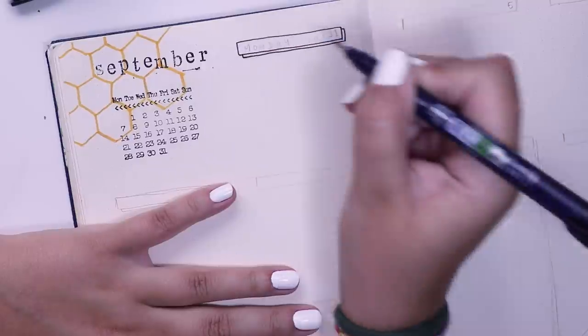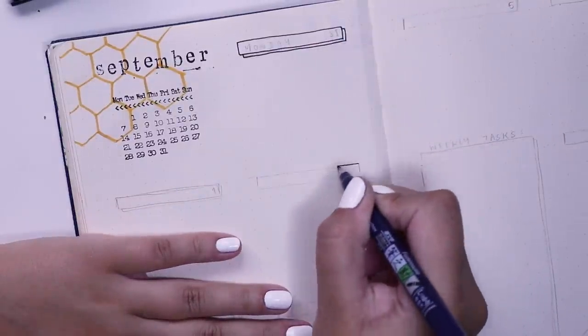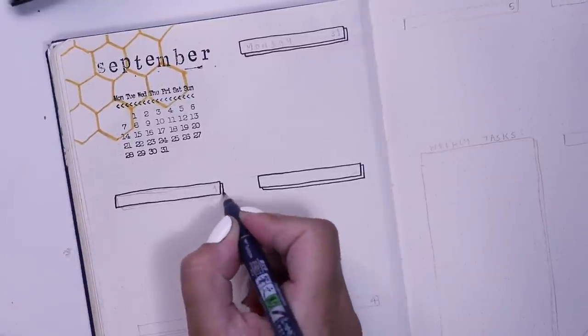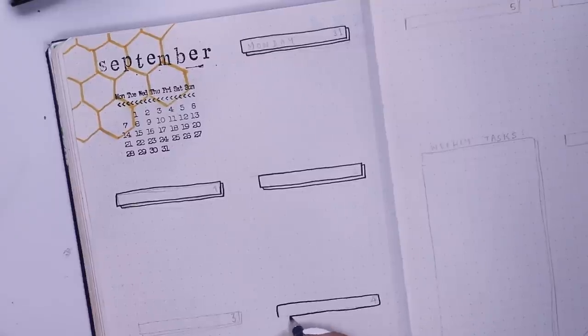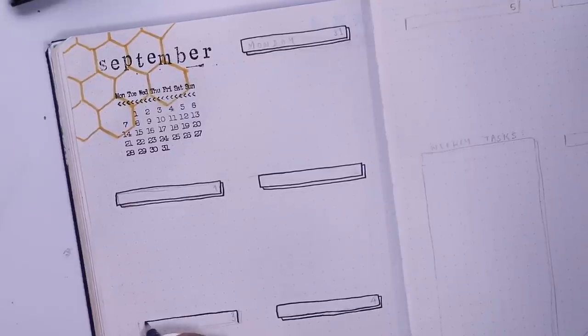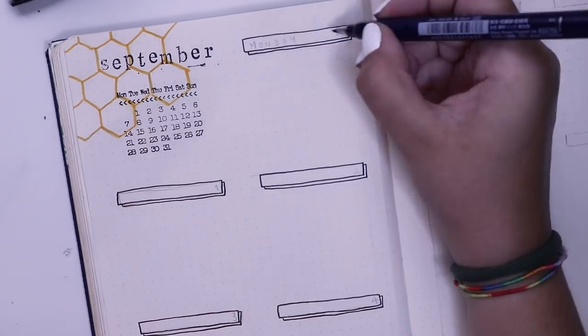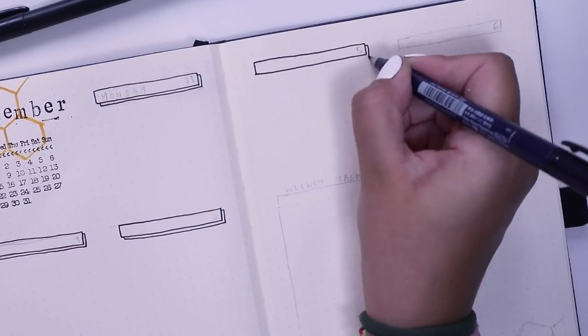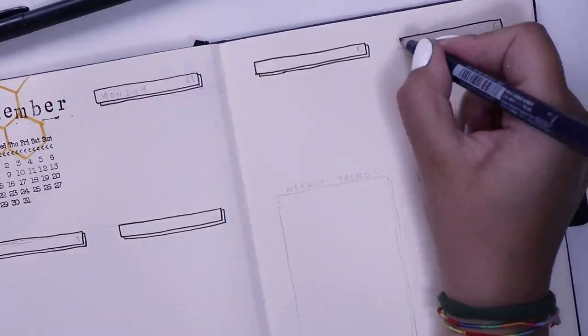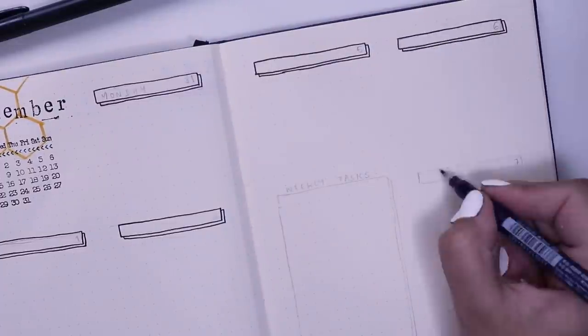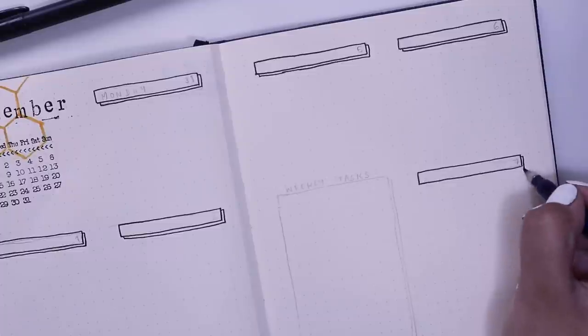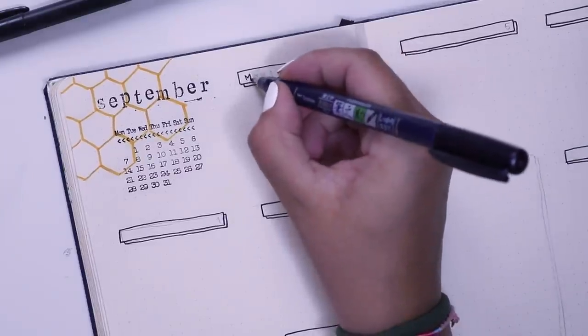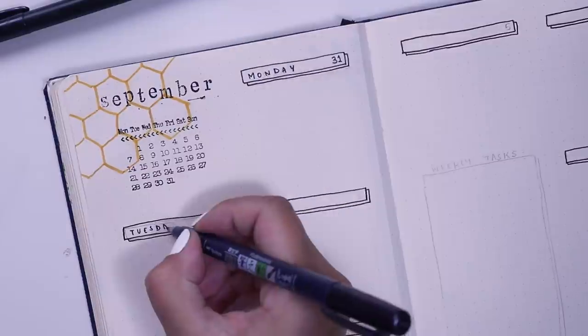Then I proceeded to draw in the rectangles for each day of the week. Again, adding that little unfilled drop shadow, which I really like this effect. I think it looks awesome. Always using my Tombow Fudenosuke pen for all of these details. I really like Tombow Fudenosuke pens because they don't bleed and they don't really get smudged with anything. So I really like how practical they are. Then I went in and wrote in the days of the week in each one of these rectangles.